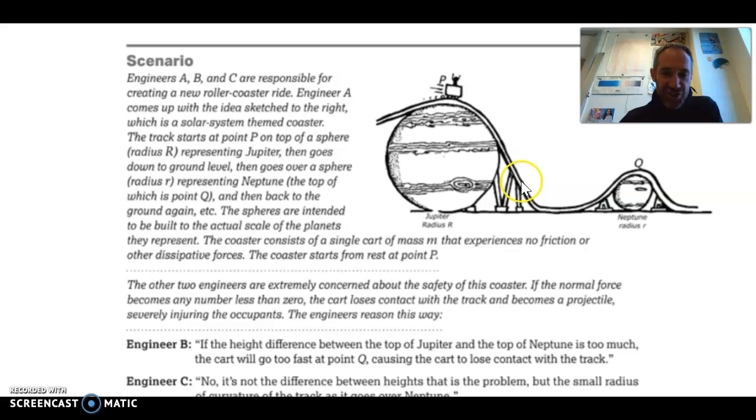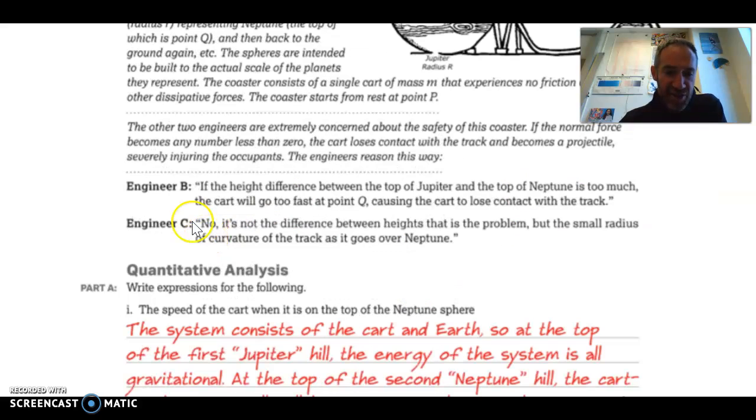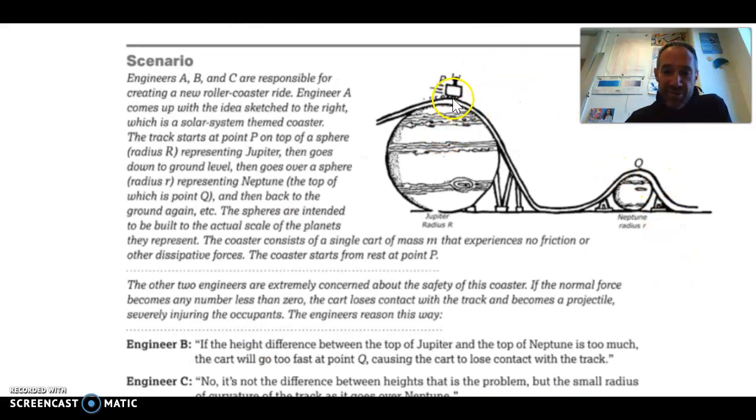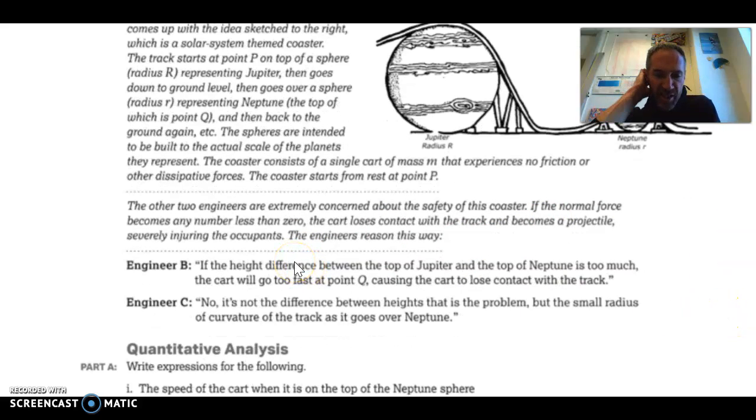Now, they want it to all be to scale, and so they want the radius of the Jupiter part and the radius of the Neptune part to be to scale the way they really are in the solar system. So they're going to call the radius of the Jupiter big R and the radius of Neptune little r, although it's still bigger than Earth. And so the one engineer sketches this thing out. It looks pretty nice, and then the other two engineers, Engineer B and C, are discussing this, and they say that Engineer B is nervous that if the height difference between the top of Jupiter and the top of Neptune is too much, the cart is going to fly off the track. He's totally right. I 100% agree with him. If this height that you're dropping down from is way too big, then you're going to be going really fast over here, and you might shoot right off the track like that.